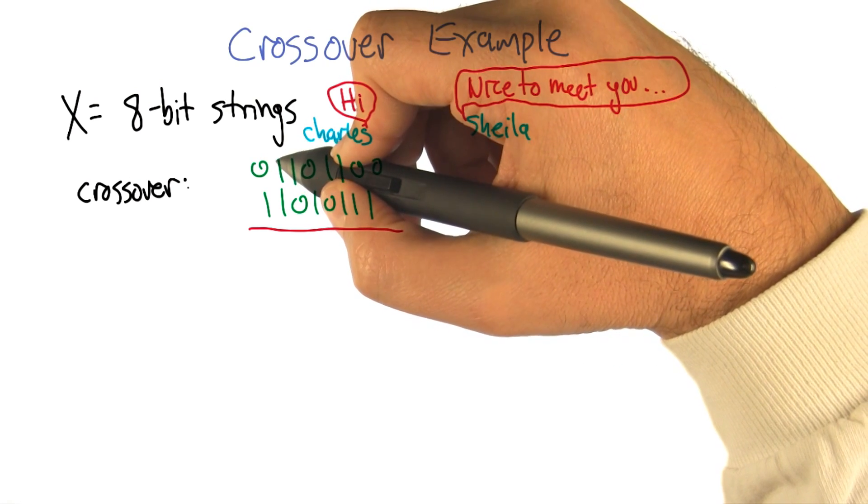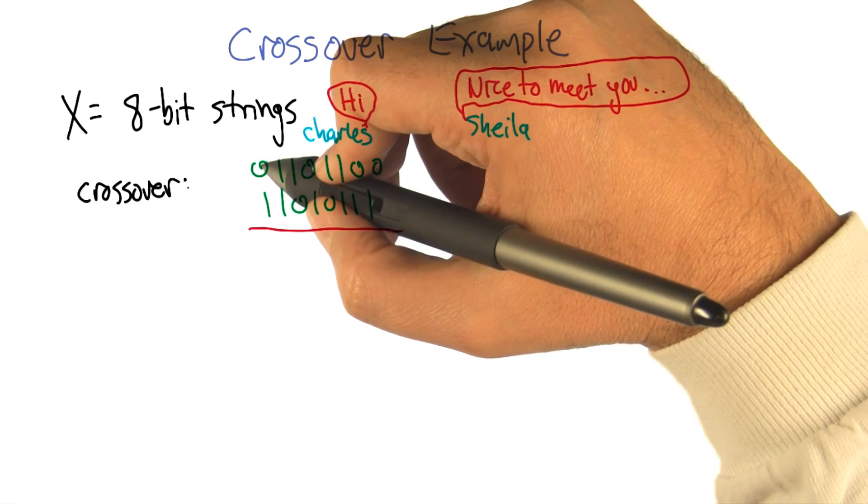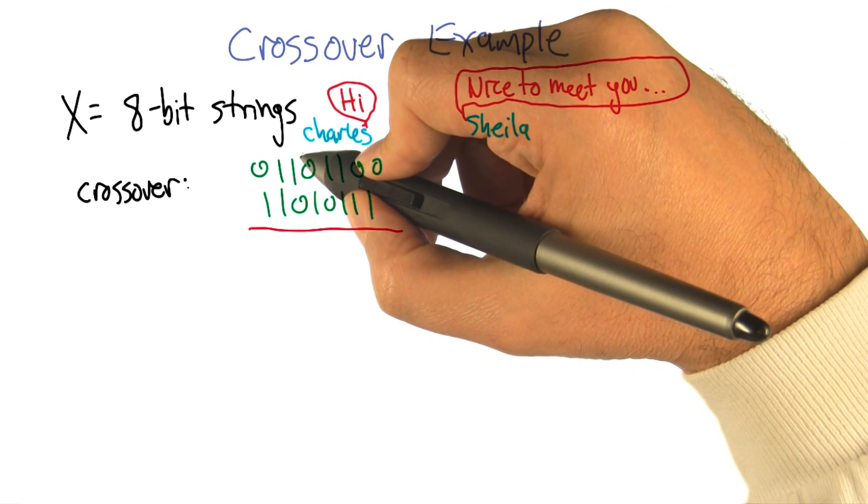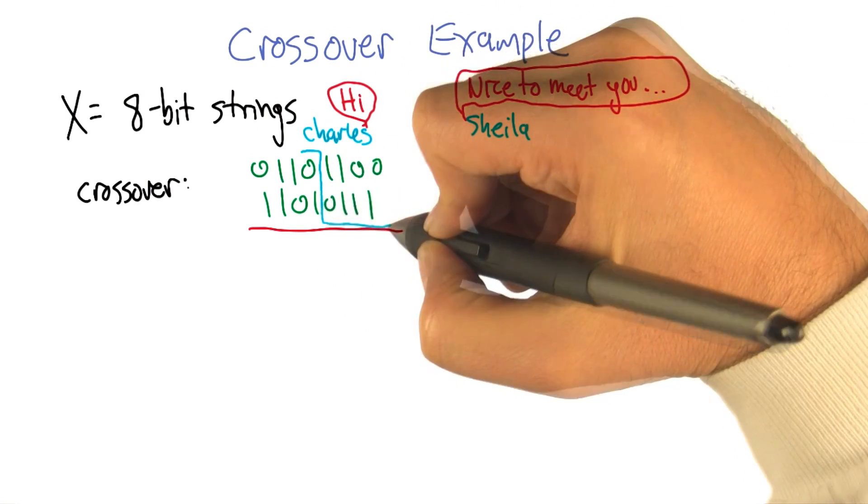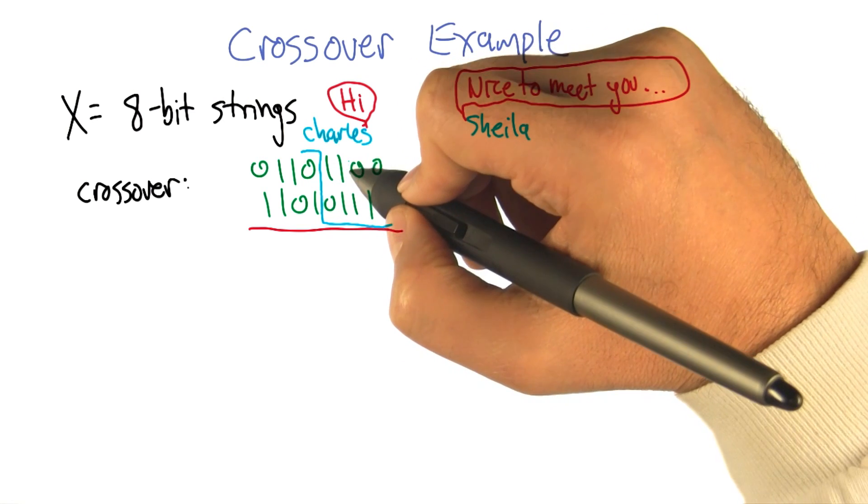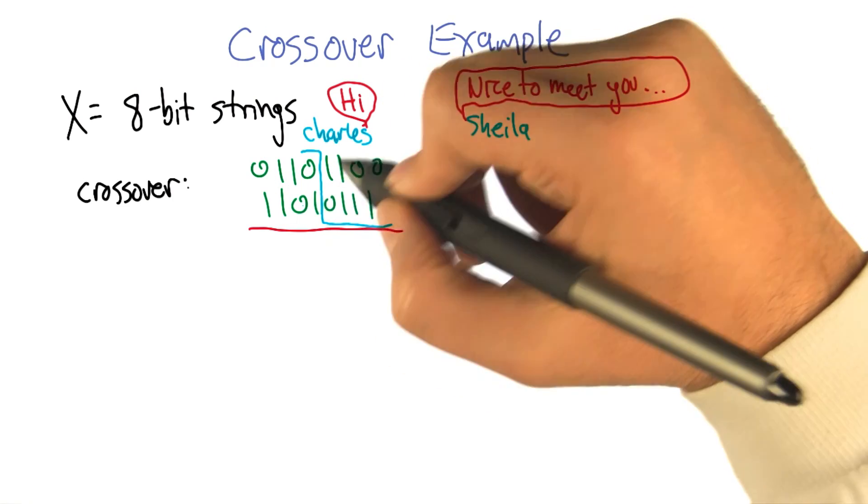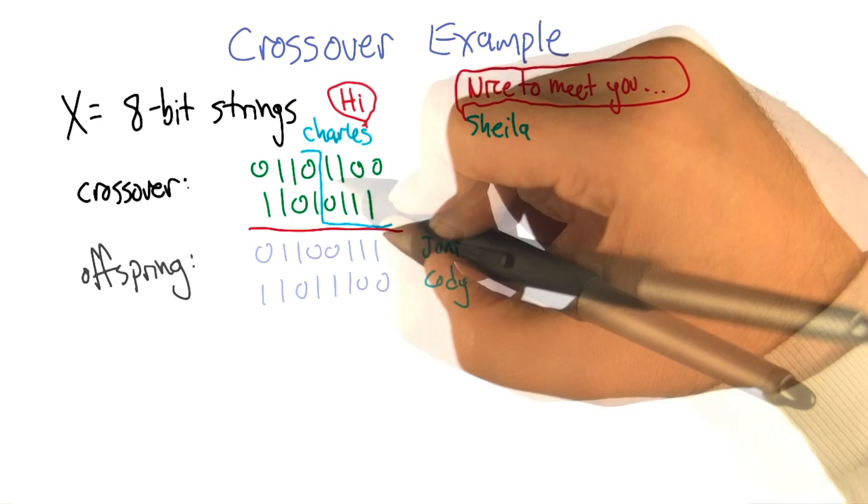All right, I see what you're doing there. So what you're saying is we're going to pick a random position along the sequence, and you said at the halfway point. And what we're going to do is now mix and match and create two offspring. One uses the first half of Charles, and the second half of Sheila, and then the other one is the other way around.